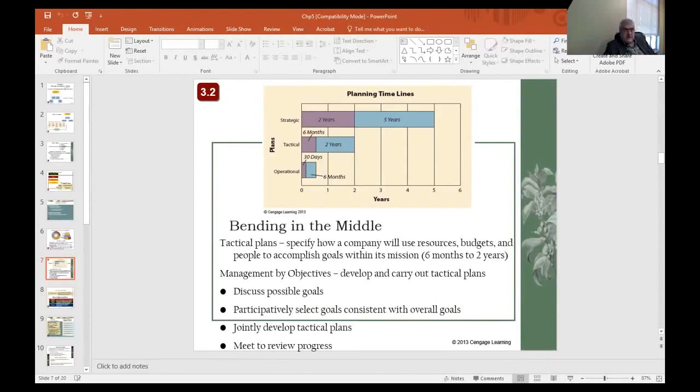So management by objectives, abbreviated as MBO, is a four-step process in which managers and their employees discuss possible goals, participatively select goals consistent with overall goals, jointly develop technical plans, and meet to review progress toward accomplishment of those goals.